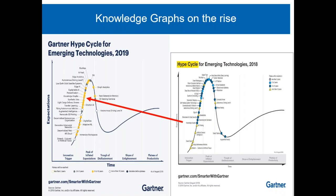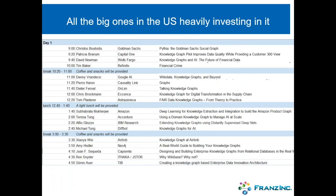In 2018 knowledge graphs were still relatively low on the hype cycle, and a year later they're already much higher. Even Gartner sees now that it's a big trend. We were in May at a wonderful conference at Columbia University — just one page of the schedule shows all the big companies now getting into knowledge graphs: Goldman Sachs, Capital One, Wells Fargo, Google, LinkedIn, AstraZeneca, and other pharmaceutical companies.